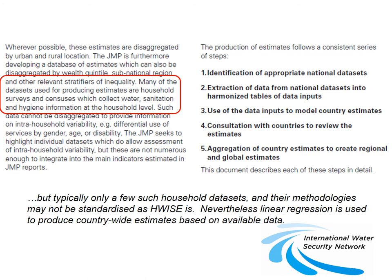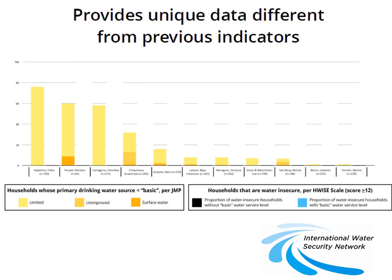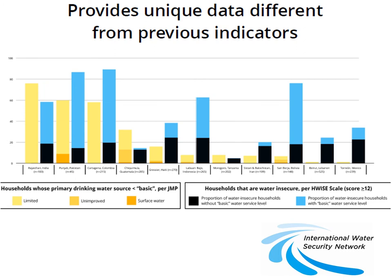However, the JMP, because it operates at the international scale and relies primarily on data collected by national governments, frequently is unable to draw on high-quality, high-resolution household experiential data. Although there are some other research initiatives a little bit like HWISE, there are no initiatives that, like HWISE, have developed a globally comparative way of measuring household water insecurity through a small number of easily applied and reliable survey questions. What we've tended to find is that HWISE seems to describe more of the experience of household water insecurity than the basic Joint Monitoring Panel measures.